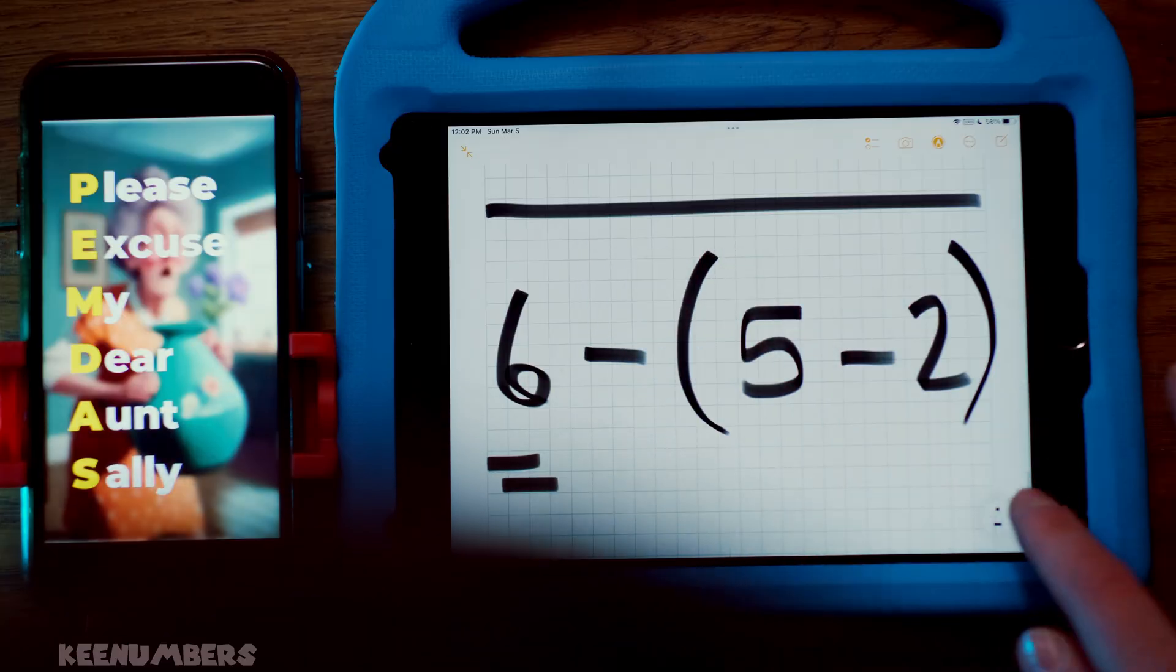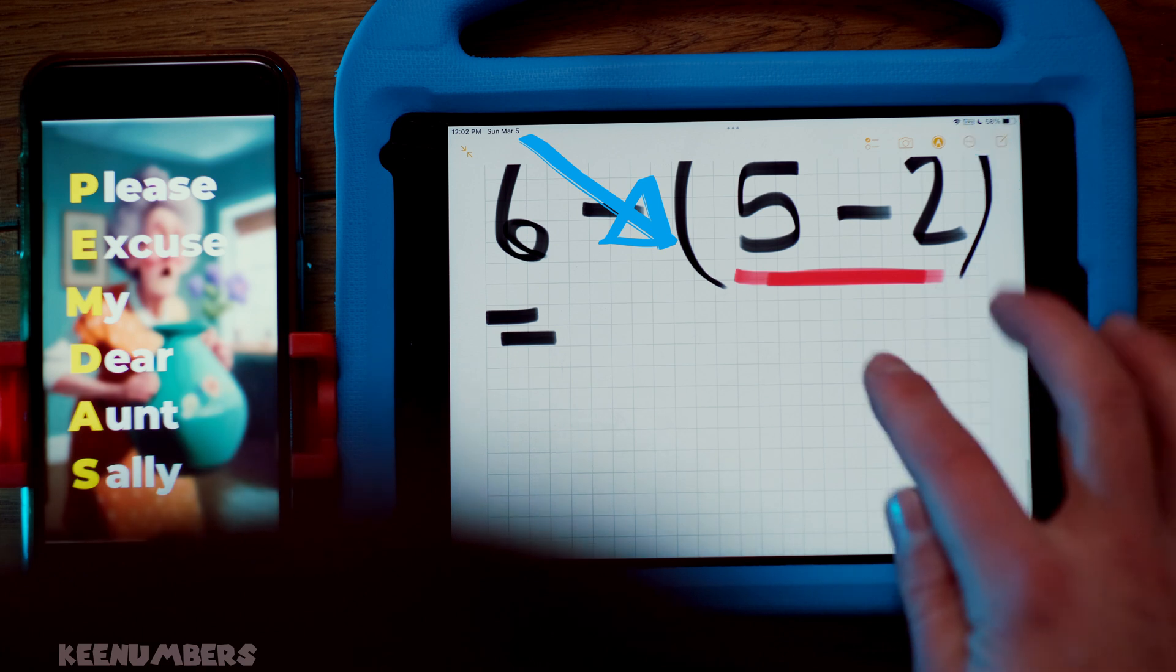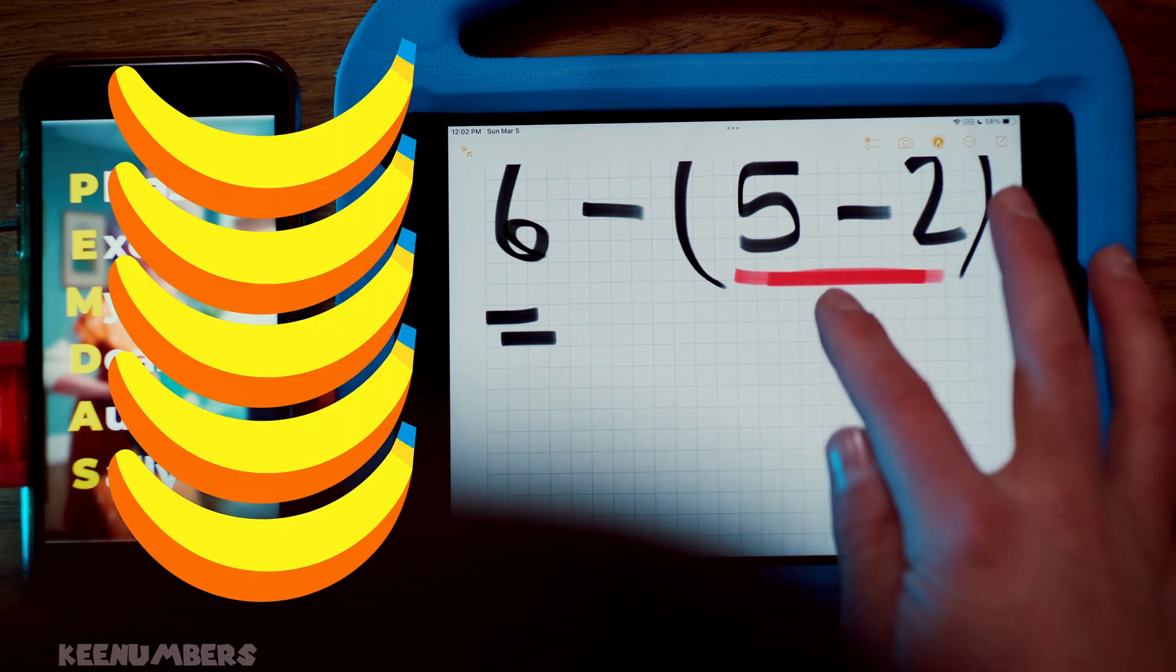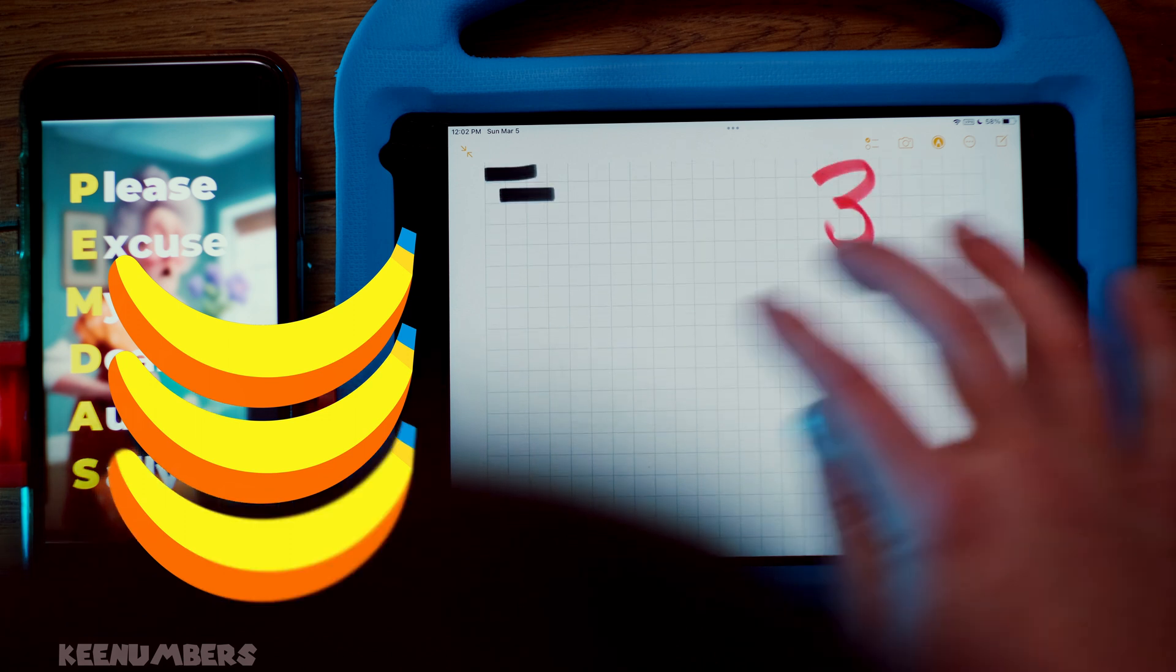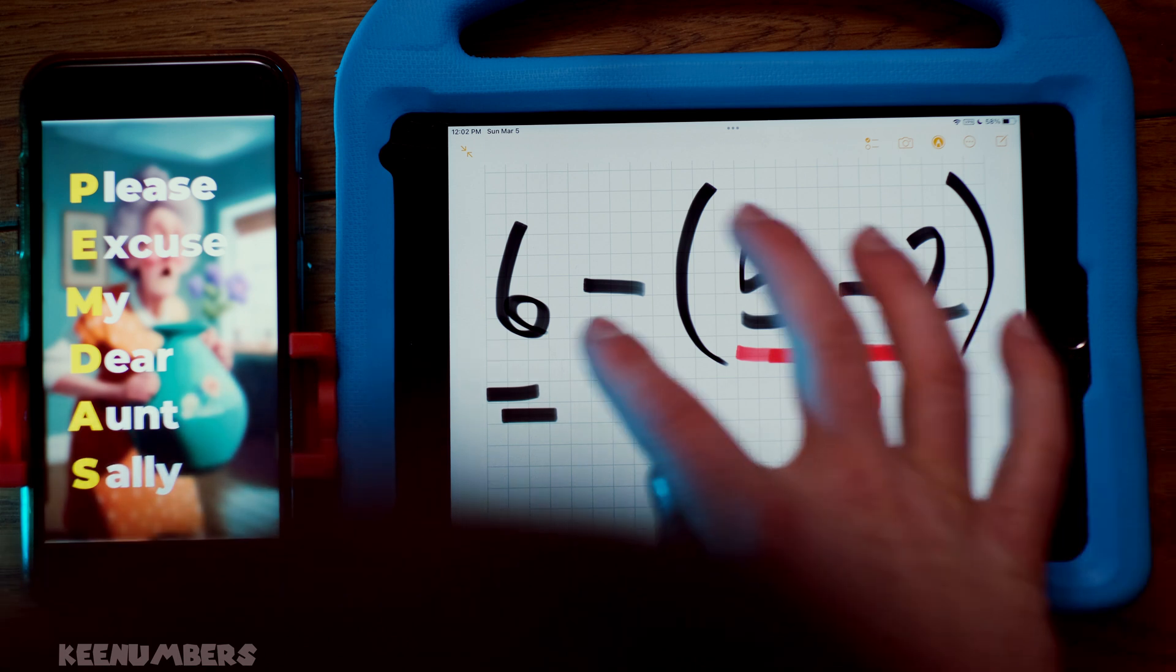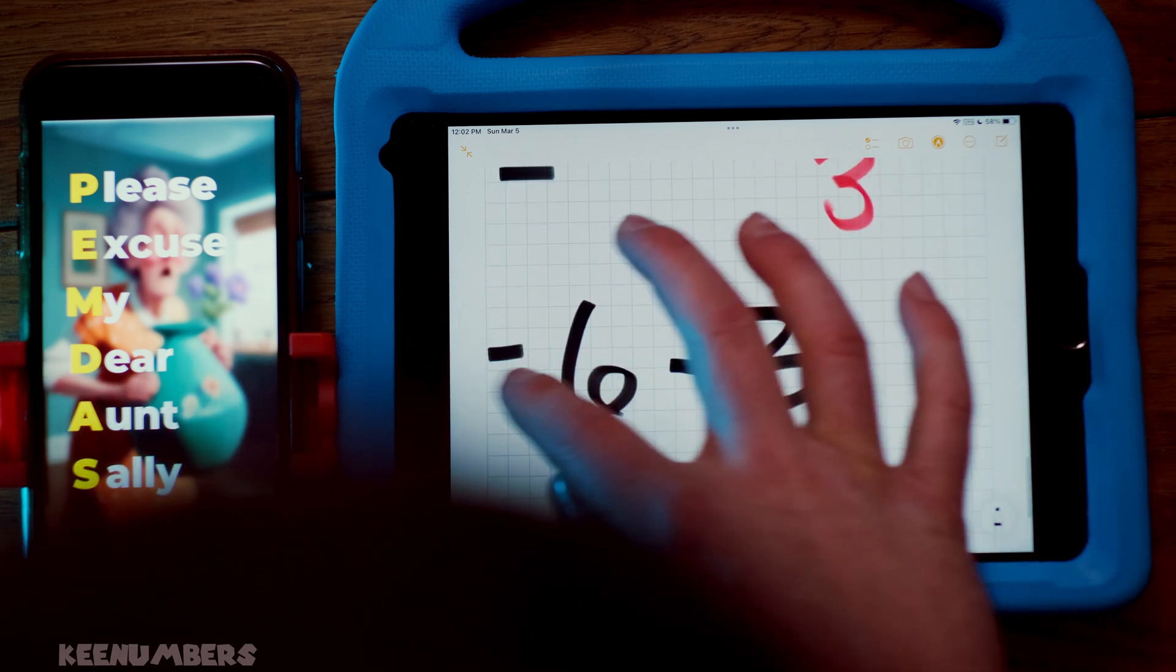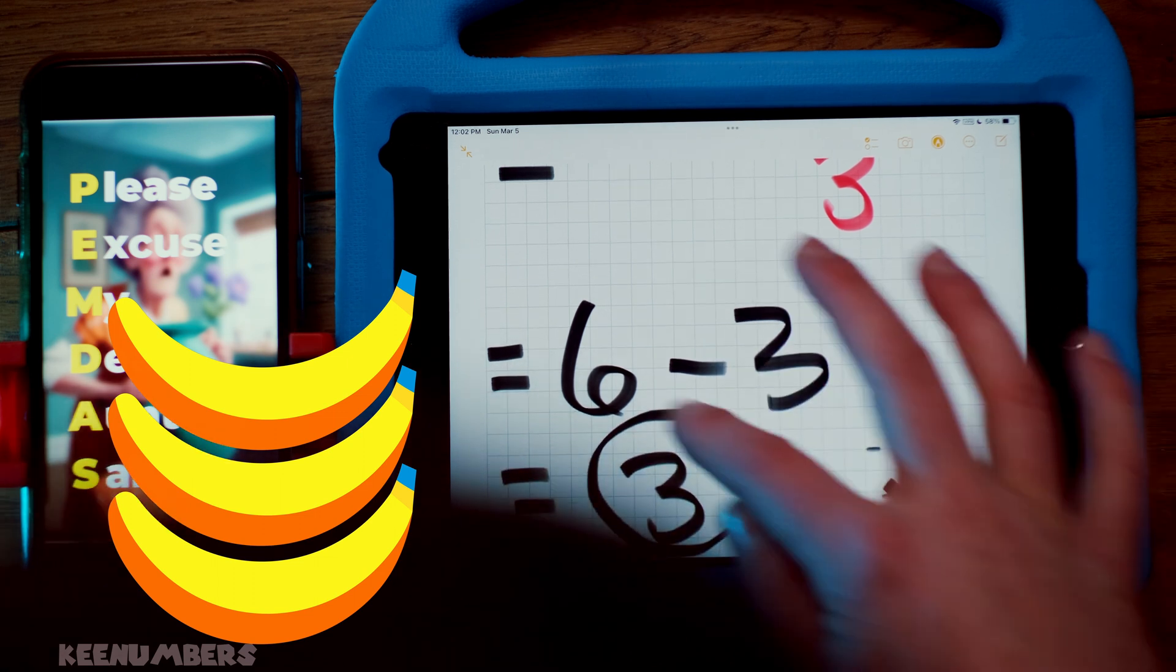Also, 6 minus parentheses 5 minus 2 close parentheses. Alright, you're going to look at what's inside the parentheses first. Take away 2 apples from 5 apples, you have 3 apples. And so you have 6 minus 3. Well, you already know what that is. You have 6 donuts, you eat 3 of them, you're left with 3 donuts.